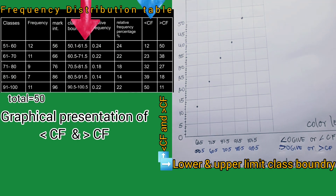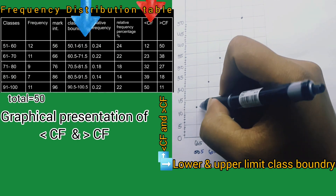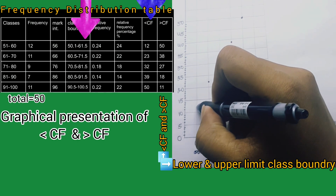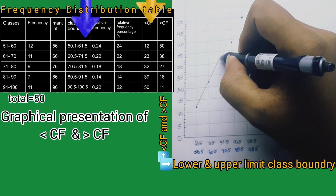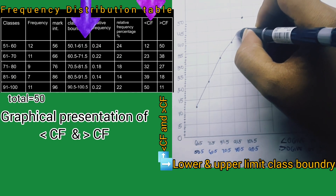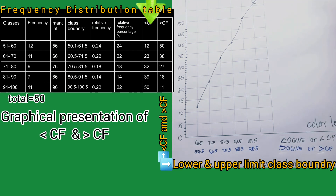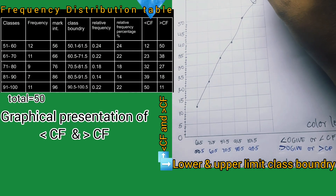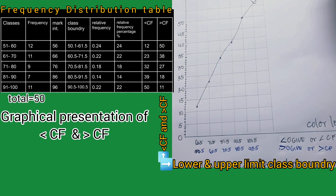Now we are going to connect the dots. We start from the bottom going up, and the line should go upward like that. This is the left shift cumulative frequency, or left shift ogive.